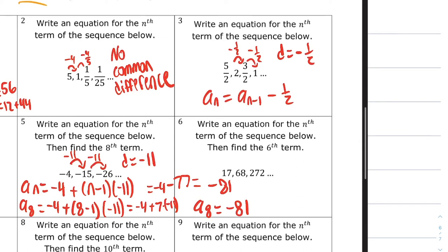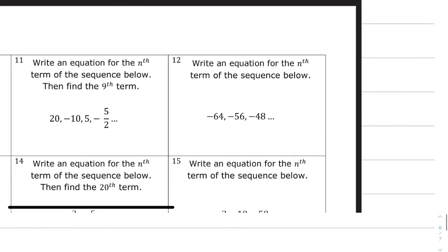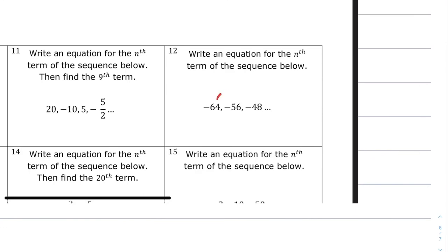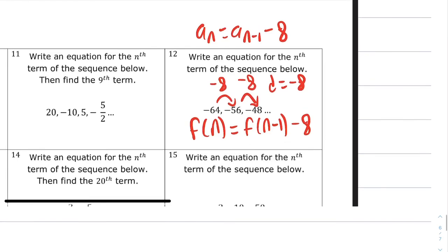There is one more way that you can see these formulas, and it's just a little change in notation, and I'll show that on a different example. This one has minus 8 for d, so instead of writing a_n equals a_(n-1) minus 8, another way that you could see this answer is f(n) equals f(n-1) minus 8. This is just a different notation, but it means the same exact thing.